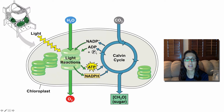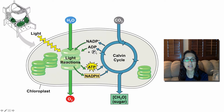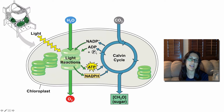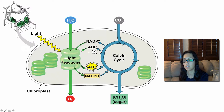The light-dependent reactions happen inside the thylakoids. Light and water go into a thylakoid, and out is going to come your oxygen, your ATP, and your NADPH. That's the light-dependent reactions, which is what we're going to focus on right now, and then we'll be getting into the Calvin cycle later on.